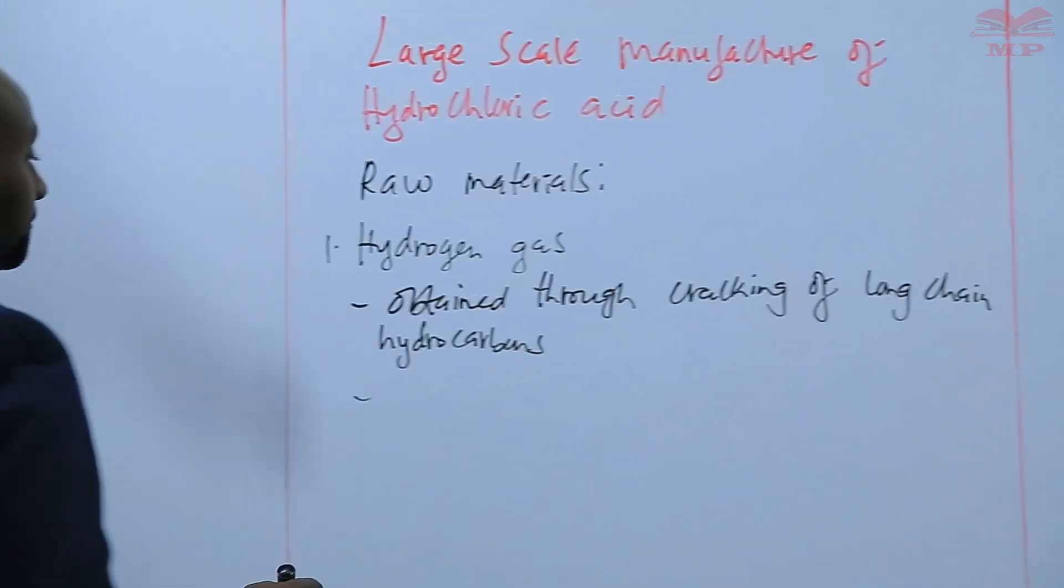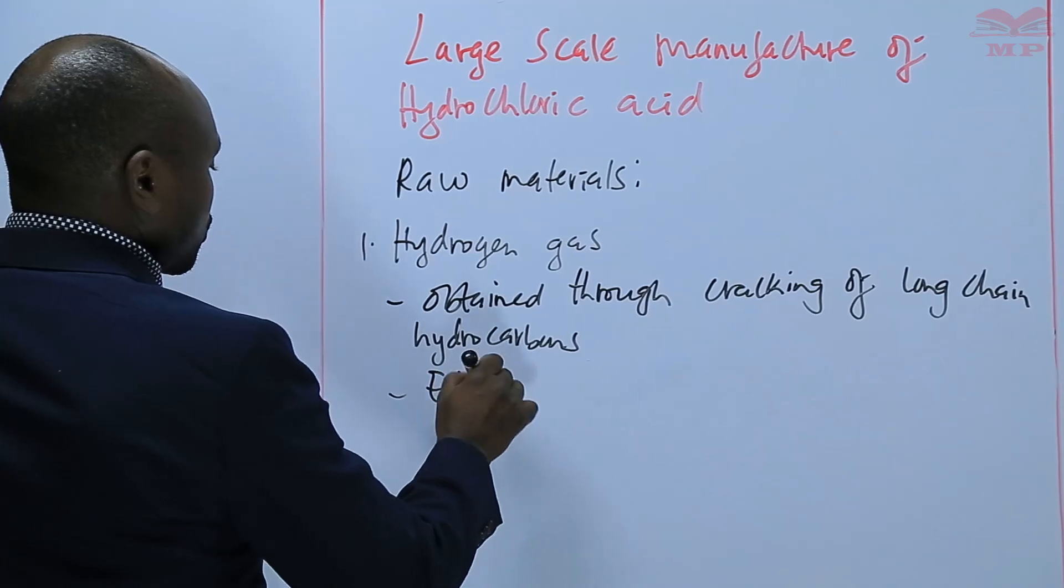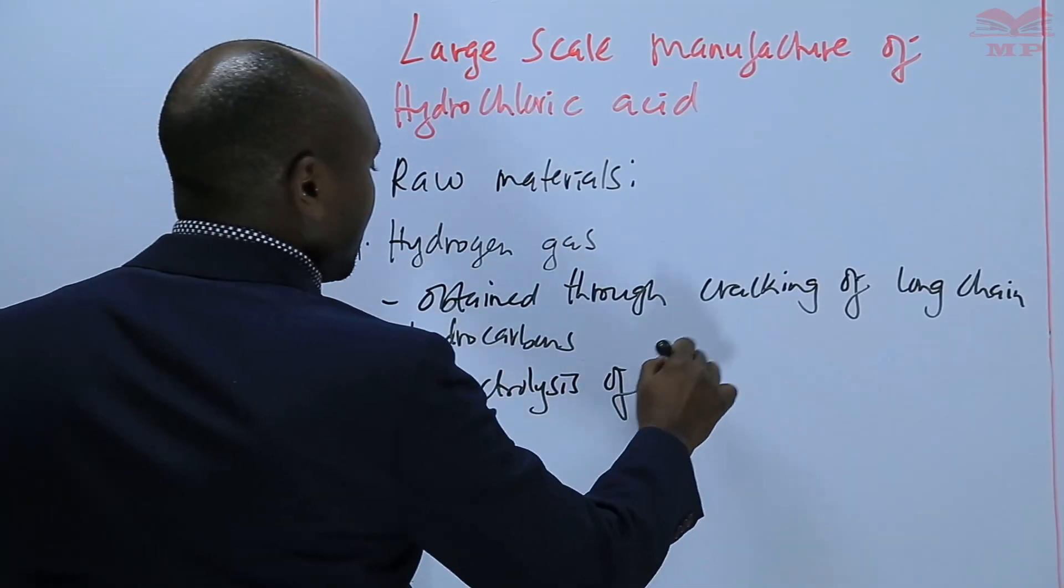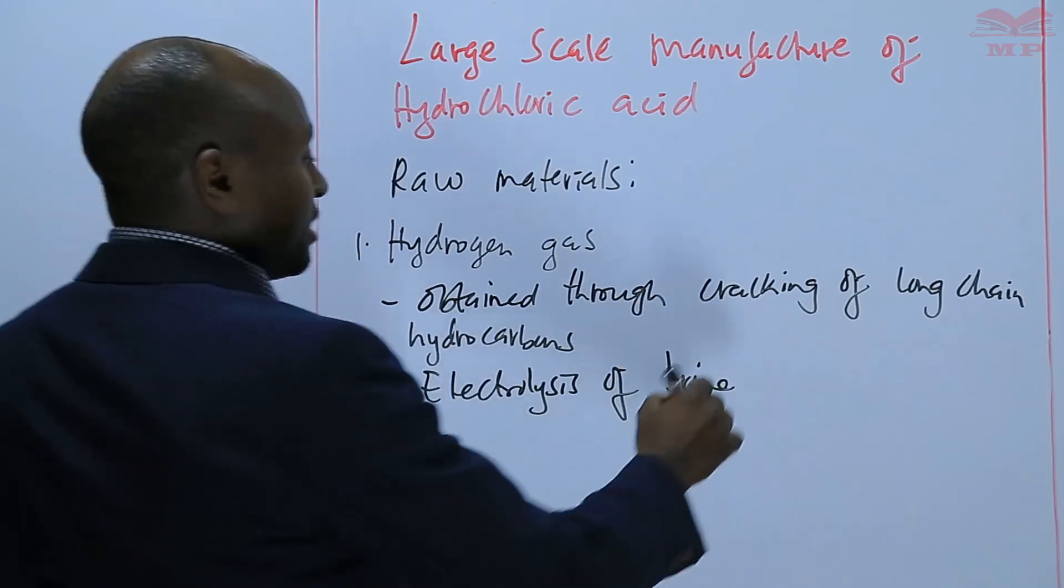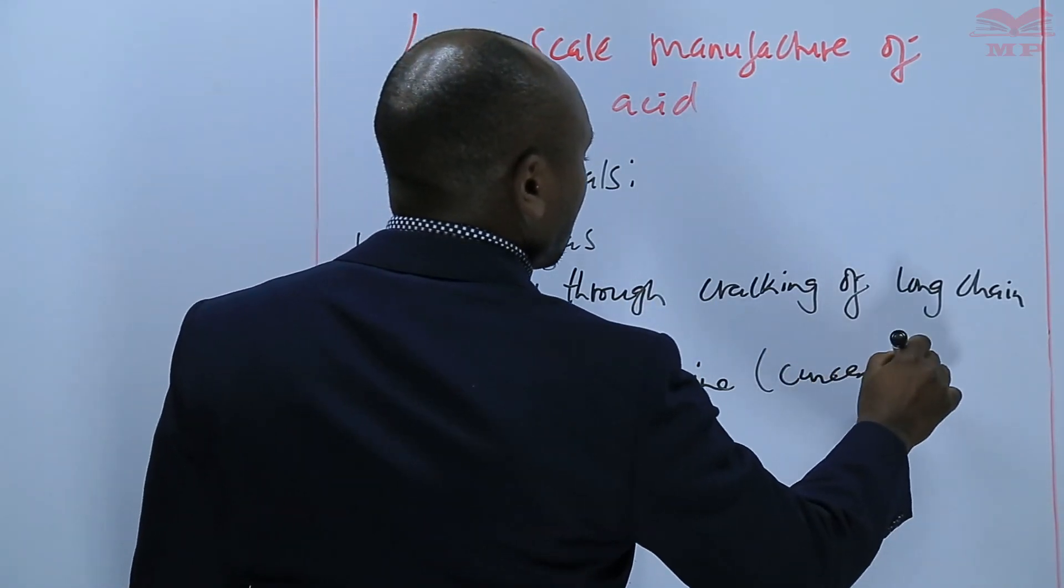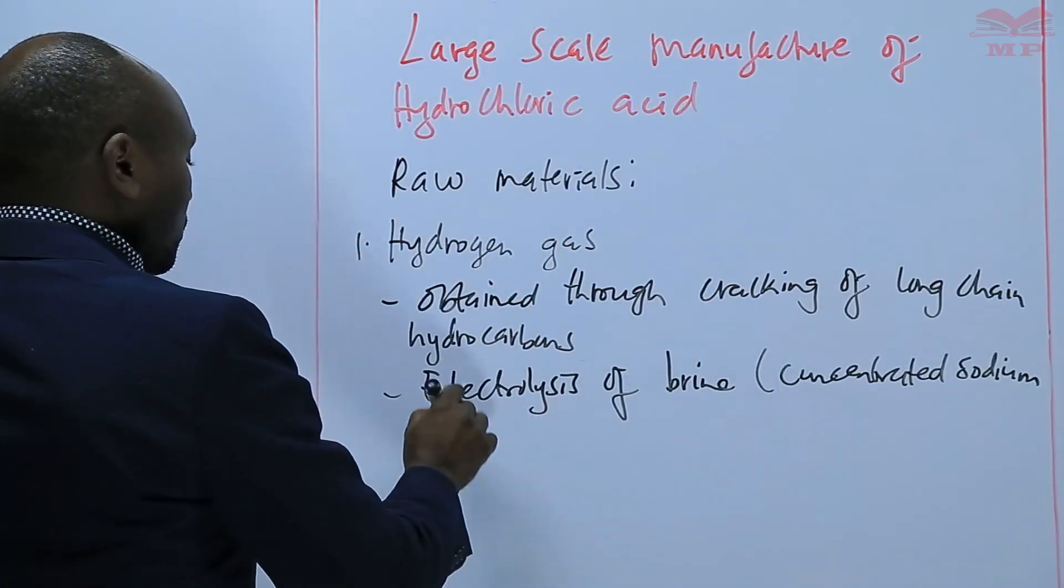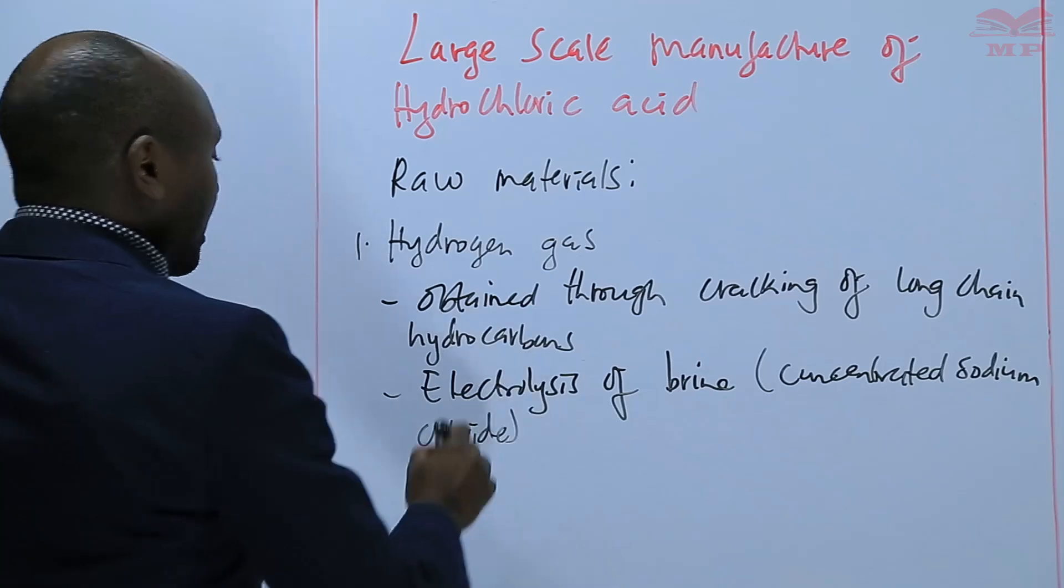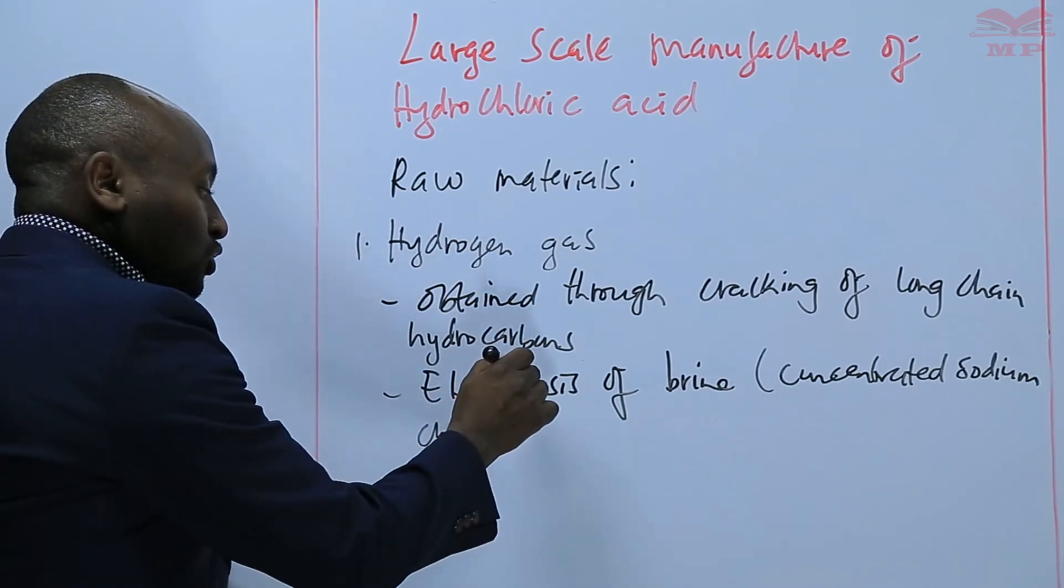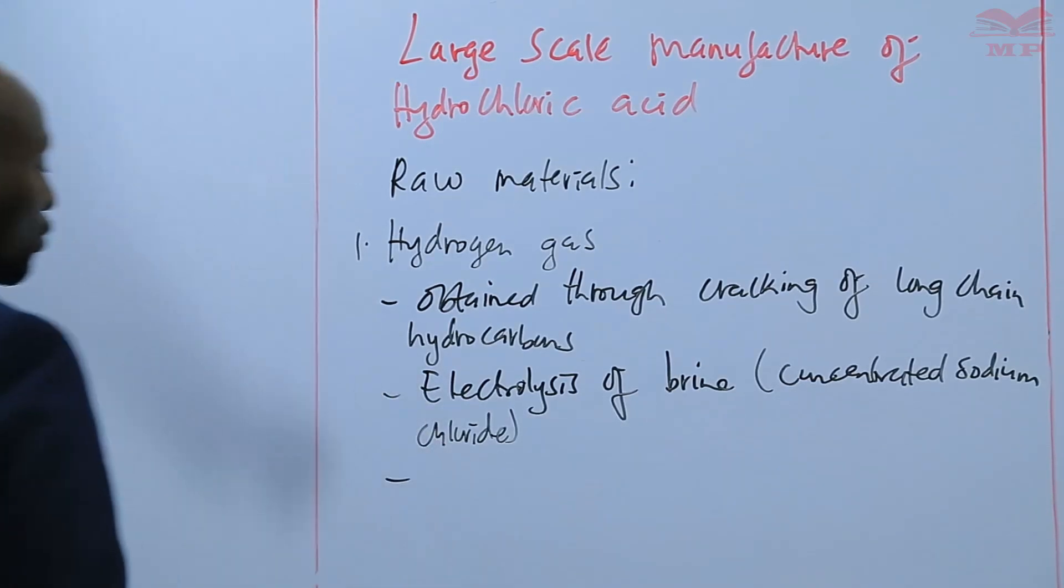Number two, we can also obtain hydrogen gas by electrolysis of brine. Brine is concentrated sodium chloride. So once it is electrolyzed or taken through electrolysis, hydrogen gas is produced.